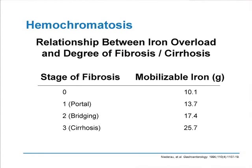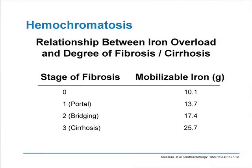How is the accumulation of iron related to disease? Evidence from Niederau and colleagues in Düsseldorf, Germany, showed that the stage of fibrosis and ultimately cirrhosis is clearly quantitatively related to the amount of mobilizable iron — iron that has been removed in the course of treatment by phlebotomy. You can add up the blood donations until the patient is de-ironed, which represents total body iron stores. There is quite clearly a relationship: the more iron is mobilizable, the more likely you are to have developed end organ damage.